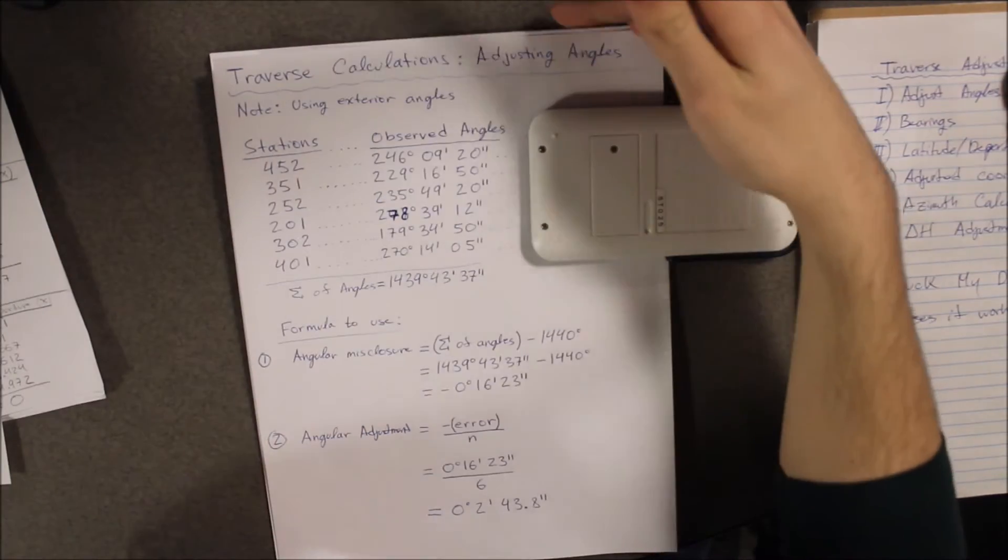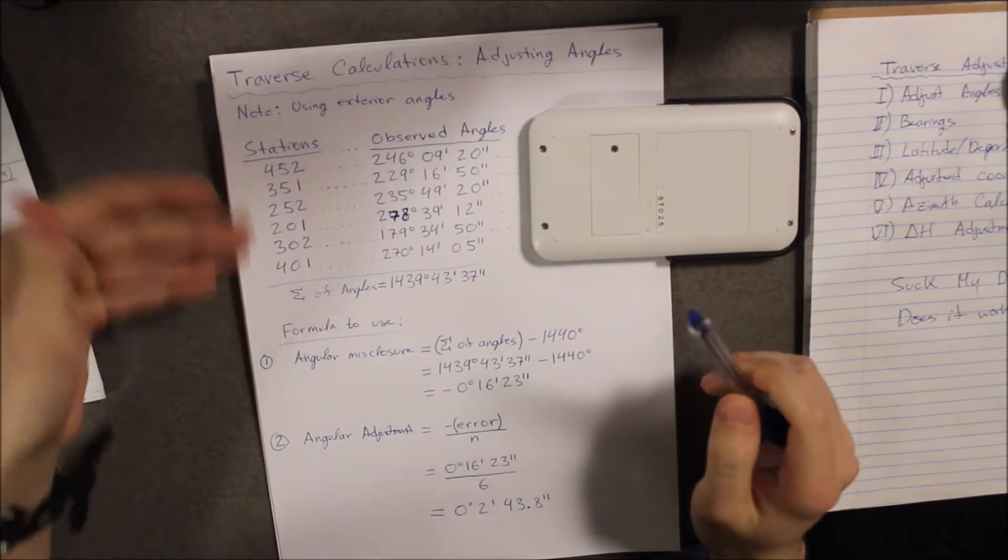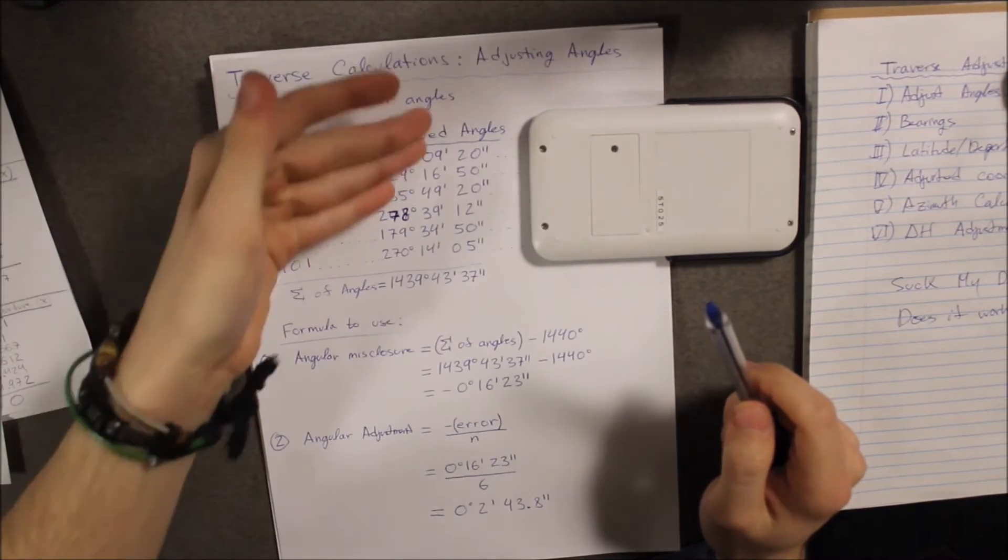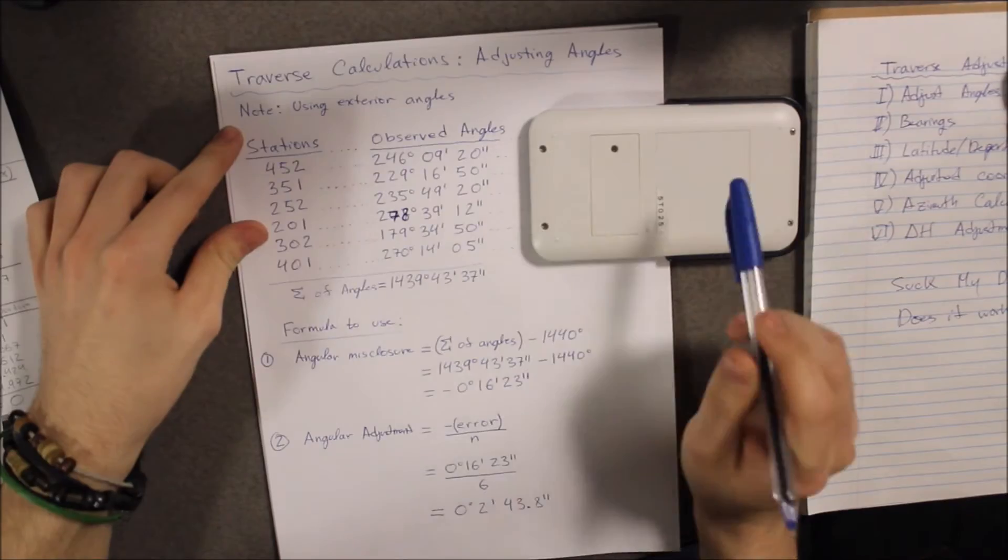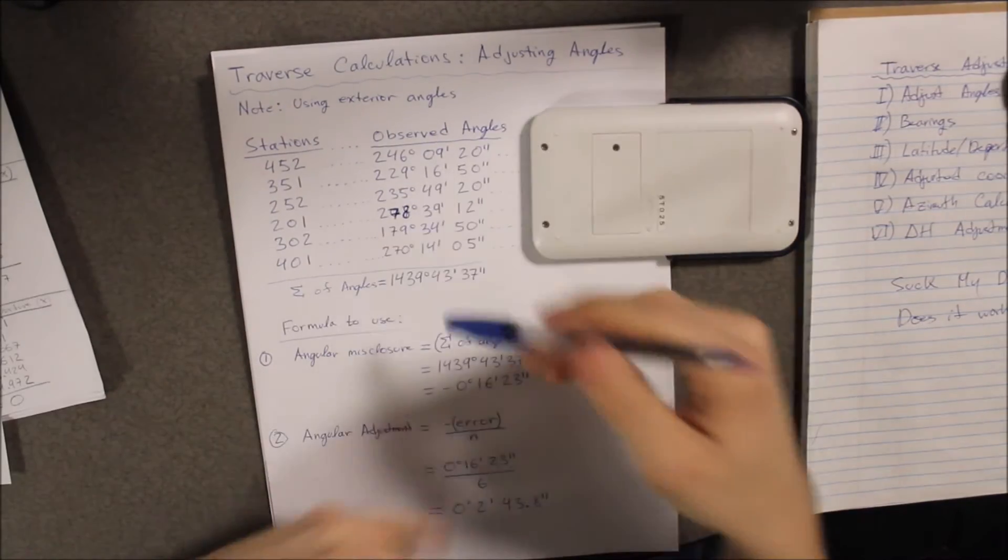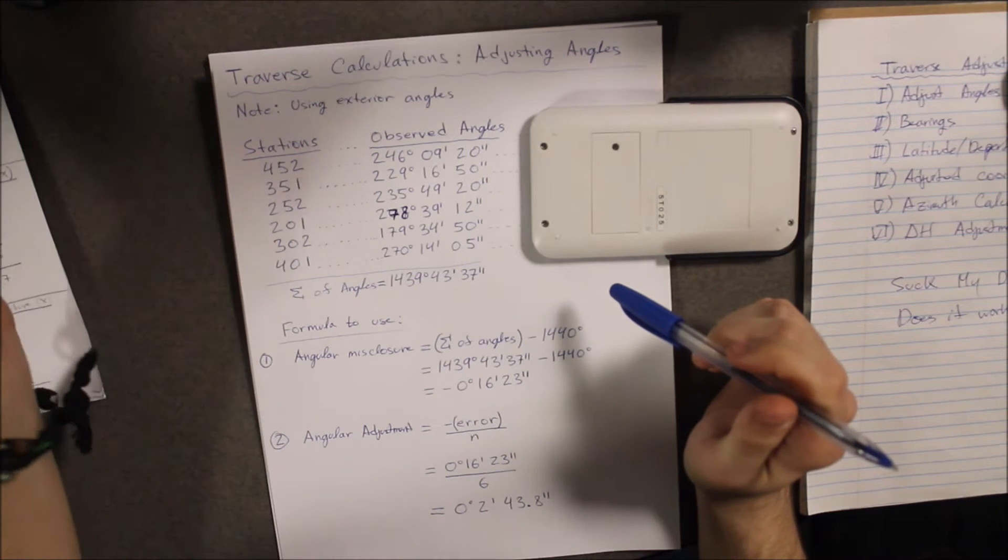So as you can see, this is the information that we need for step one. You're going to have six stations and equally so you're going to have six observed exterior angles. And again, note, we're only using exterior angles. Now, in this particular example, I am using the information from our project.